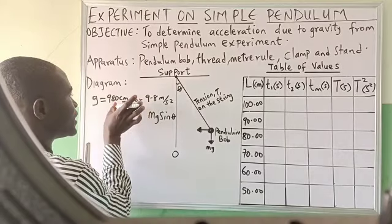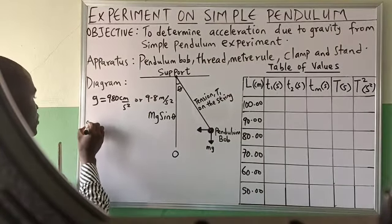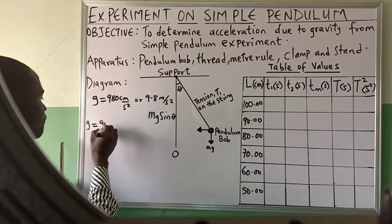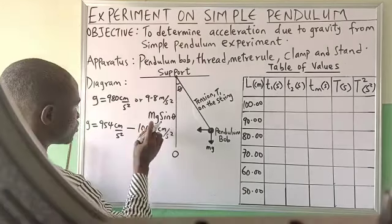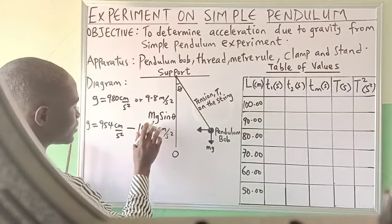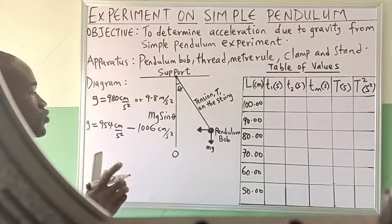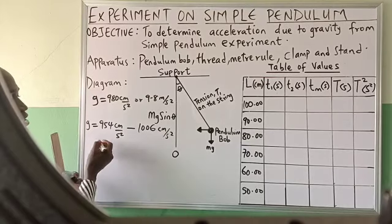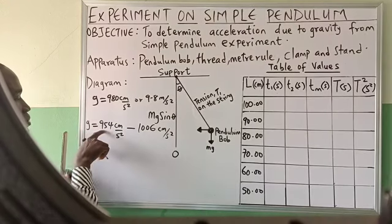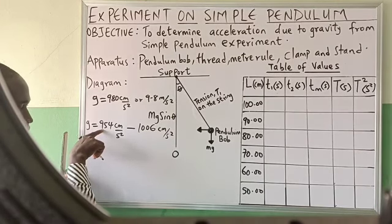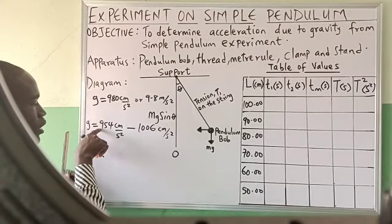If your answer is not exactly this value, it should fall within this range: g equals 954 cm per second squared to 1006 cm per second squared. This is the range of values you have to get. If you approximate to the nearest hundred, it gives you 1000.